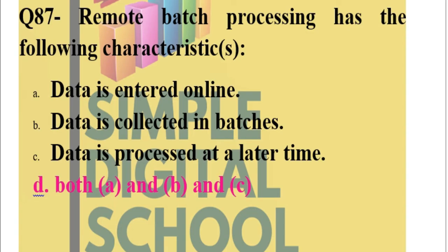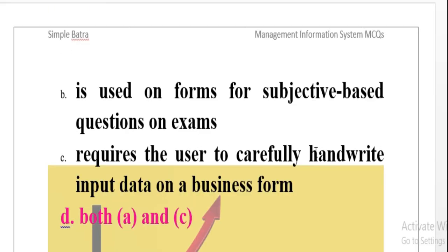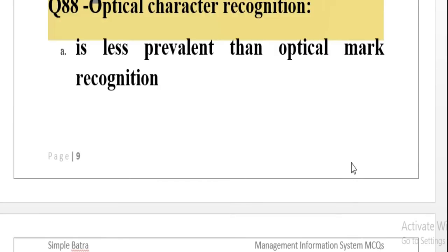Question number 88: Optical character recognition is less prevalent than optical mark recognition, is used on the forms for subjective based questions on exams, requires the user to carefully hand write input data on a business form, or both a and c. What is right about optical character recognition?